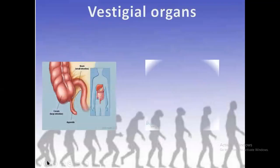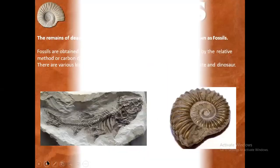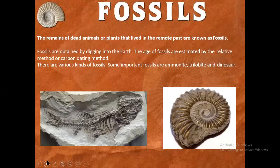Vestigial organs are organs which are non-functional in present-day forms but were functional in ancestors — like the appendix and wisdom tooth. Fossils are the remains of dead animals or plants that lived in the remote past. Fossils are obtained by digging into the earth, and their age is estimated by the relative method or carbon dating method. Some important fossils are Ammonite, Trilobite, and dinosaurs.